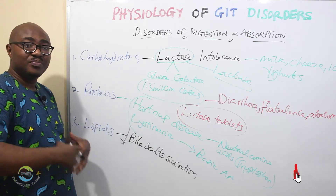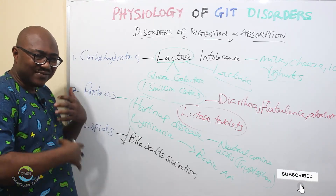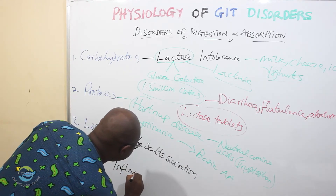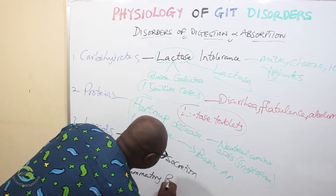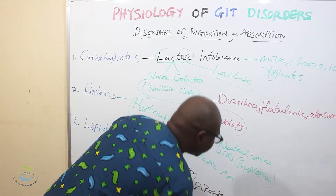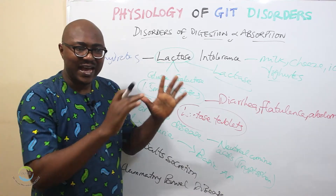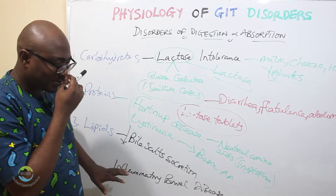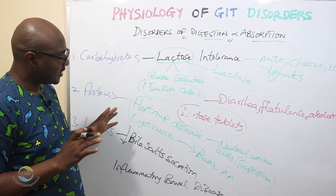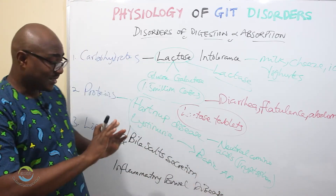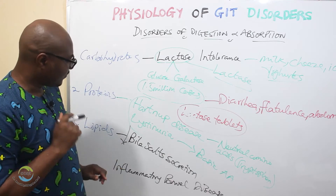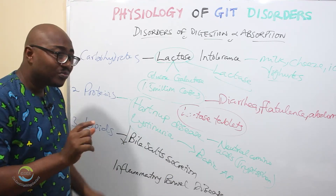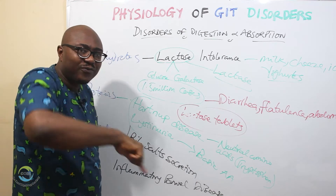Other causes include inflammation of the GIT mucosa — what we call inflammatory bowel disease. When those villi are inflamed, they cannot absorb lipids very well and cannot produce enough lipases. So basically there are four things: bile salt secretion, problem with the pancreas, problem with the intestine itself absorbing, and the kind of fats eaten.